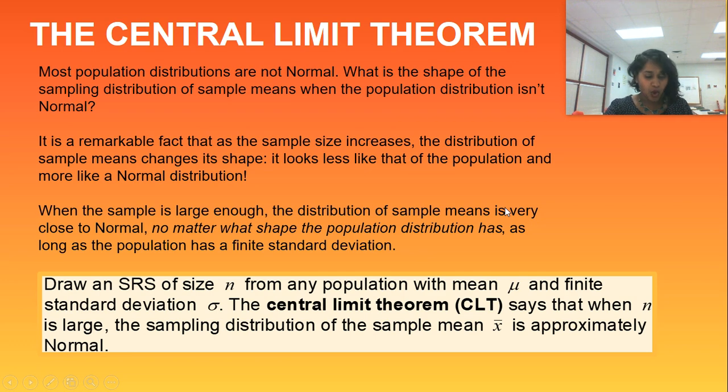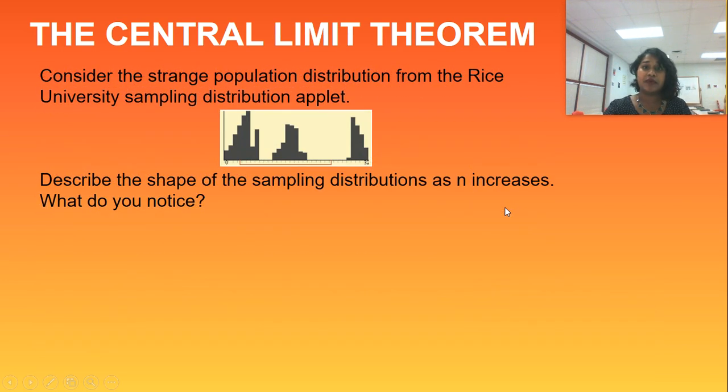So here's formal definition of the central limit theorem. Got some information on it, and I think I got one more slide to maybe visually demonstrate that. Okay, here we go. So we've got the Rice University sampling distribution applet. If you're curious and you want to look on about this, this is on page 457 to 458. So this is a super ugly, weird-looking population distribution. This is the original distribution.